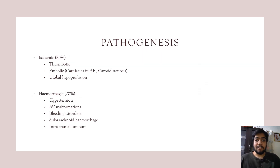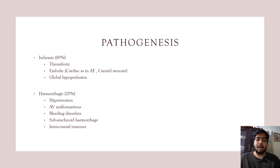Regarding the pathogenesis of stroke, most strokes are ischemic in origin, comprising 80% of strokes. Ischemia can be due to thrombosis, emboli from the heart as in atrial fibrillation, from the carotid artery in carotid stenosis, or due to global hypoperfusion as in shock. The second type is hemorrhagic stroke, comprising 20% of strokes, which can be due to hypertension, AV malformations, bleeding disorders, subarachnoid hemorrhages, and intracranial tumors.